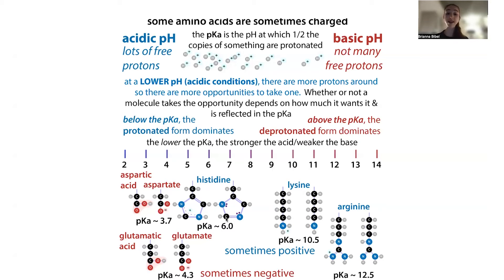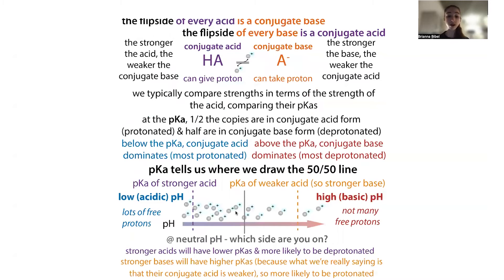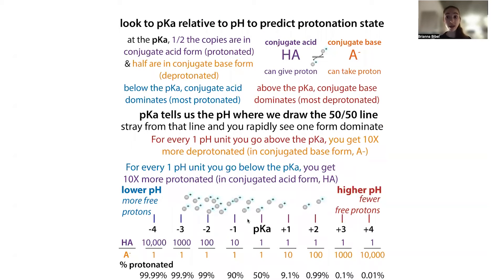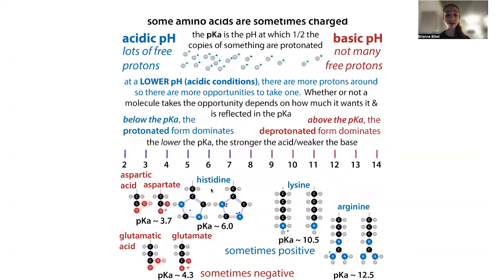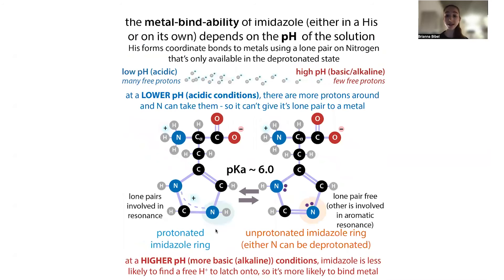Histidine is interesting because it's going to have a pKa that's actually below the pH in our bodies. In our bodies, we're going to be at a pH above the pKa. If we're above the pKa, this means there are going to be fewer protons available than it would need to be protonated most of the time. So we're actually going to find histidine deprotonated most of the time — about 90% of it is going to be deprotonated. This leaves you with significant amounts in both the protonated and deprotonated forms, and the deprotonated form is going to have a lone pair that's able to be reactive.